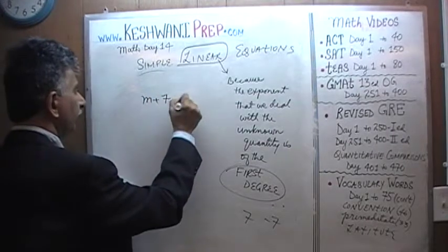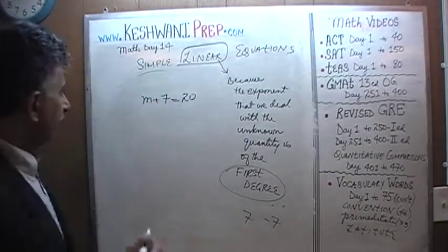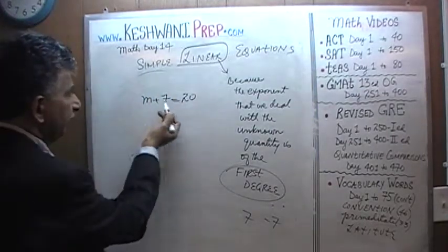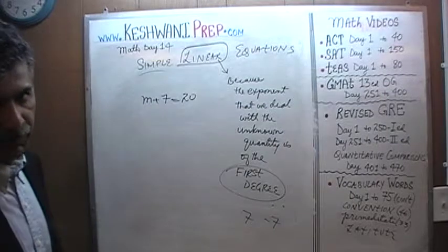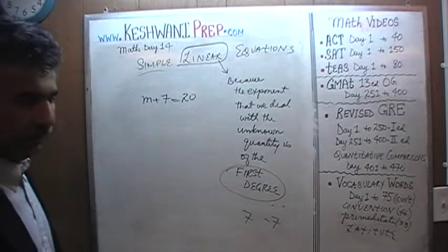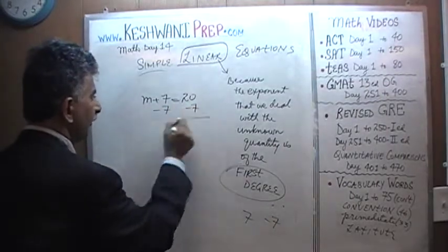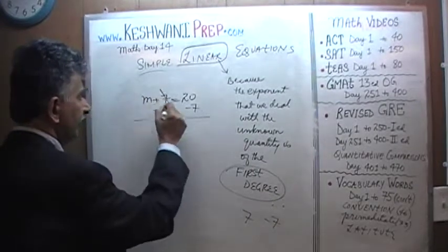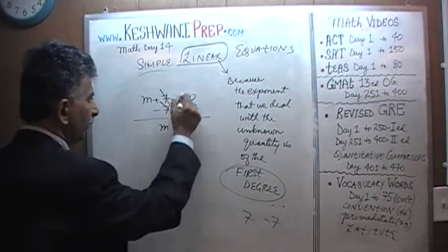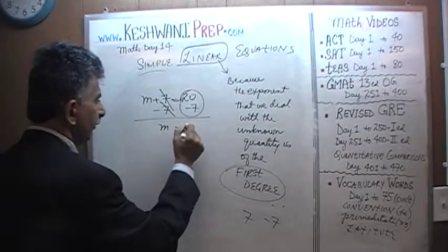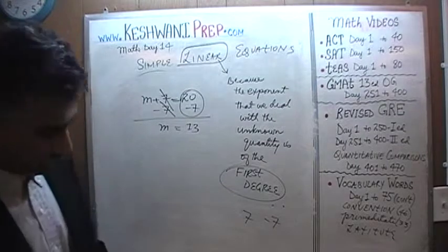Next: m plus 7 equals 20. As you can tell, 13 plus 7 is going to be 20. We know the answer but let's pretend we don't. We subtract 7 from both sides. 7 drops out and m equals 20 minus 7, which is 13 — which we knew all along.